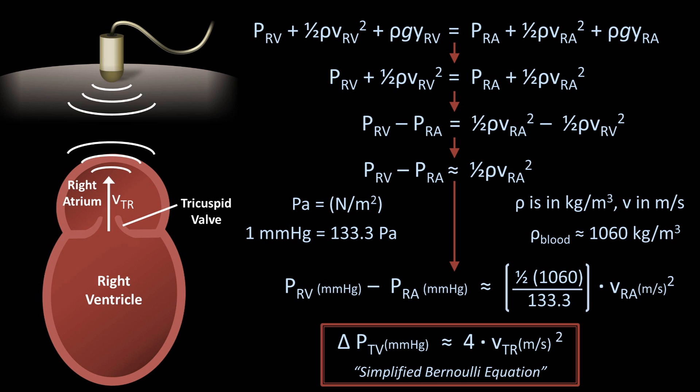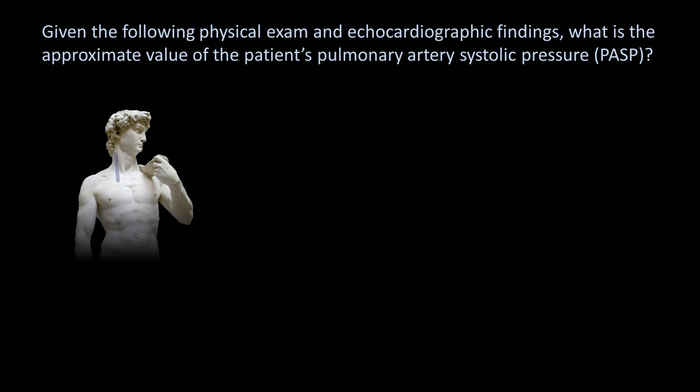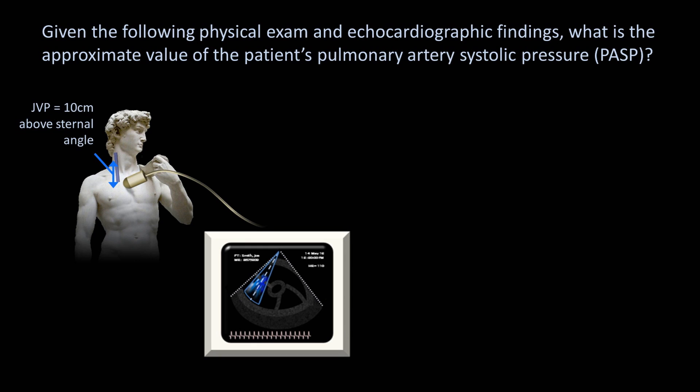Let's take a quick look at how this might be used in real life. Given the following physical exam and echocardiographic findings, what is the approximate value of the patient's pulmonary artery systolic pressure (PASP)? Our patient's jugular venous pressure — the maximum vertical height at which pulsations are still visible in the vein — is 10 centimeters above the sternal angle, which is elevated. A simultaneous echocardiogram in the parasternal short axis view allows us to measure the velocity of the tricuspid regurgitant jet, which is 3 meters per second.